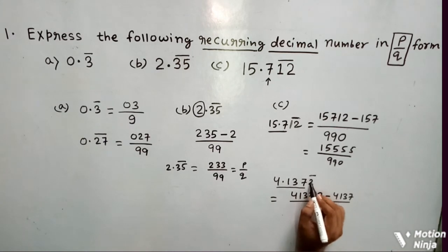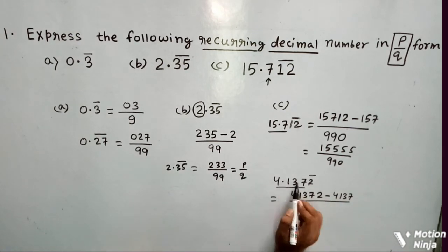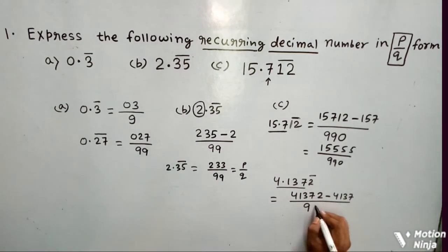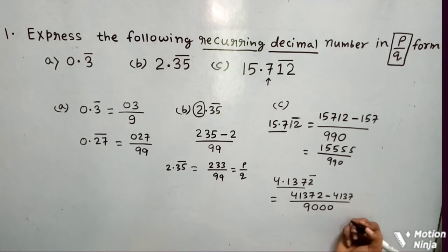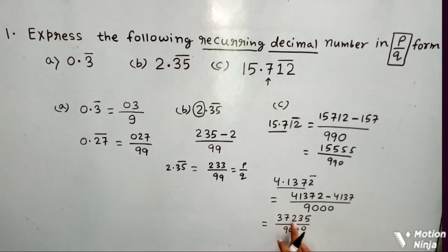Now how many digits have got a bar? Single digit, that is 2. So I will write here only 1 times 9. Now after decimal, how many digits have got no bar? There are 3 digits, that is 1, 3, and 7. So I will put here 3 zeros. On simplification you get 37235 by 9000.